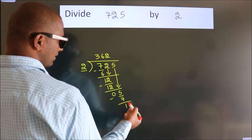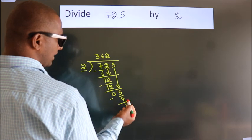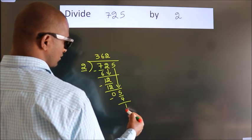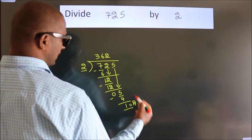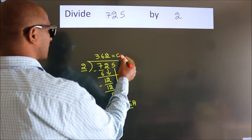After this, no more numbers to bring it down. So we stop here. This is our remainder. This is our quotient.